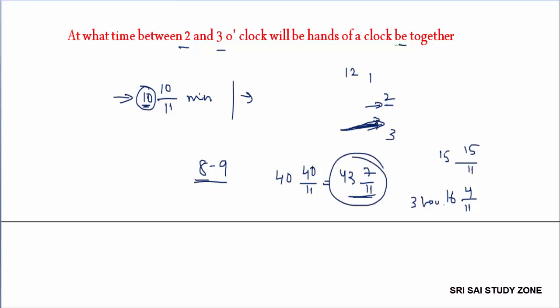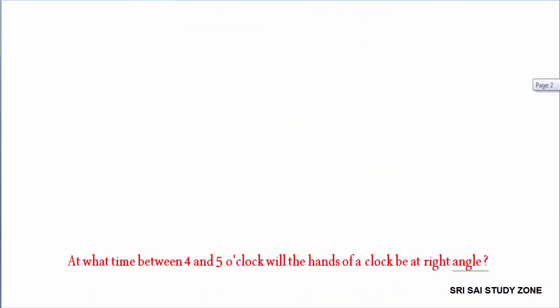We will try to do these using the formulas. So together — if you have theta equal to 90 degrees, next is 90 degrees, and also 180 degrees.